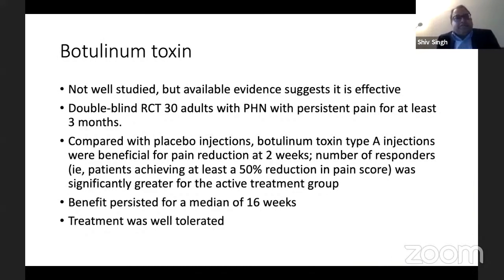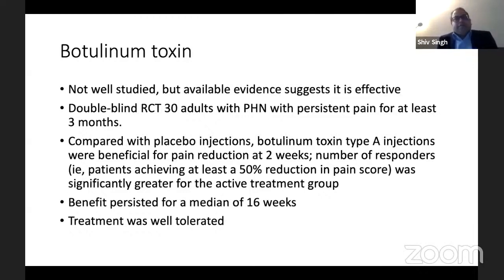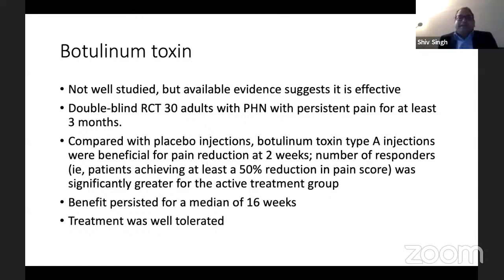Botulinum toxin — not very well studied, but whatever evidence is available shows it is effective. There have been double-blinded RCTs: 30 adults with post-herpetic neuralgia with persistent pain for at least three months were given botulinum toxin type A injection compared with placebo injection. Pain was reduced at two weeks, and the number of responders who achieved more than 50% reduction in pain score was significantly greater for the active group. The pain relief lasted for more than 16 weeks, and the treatment was well-tolerated.